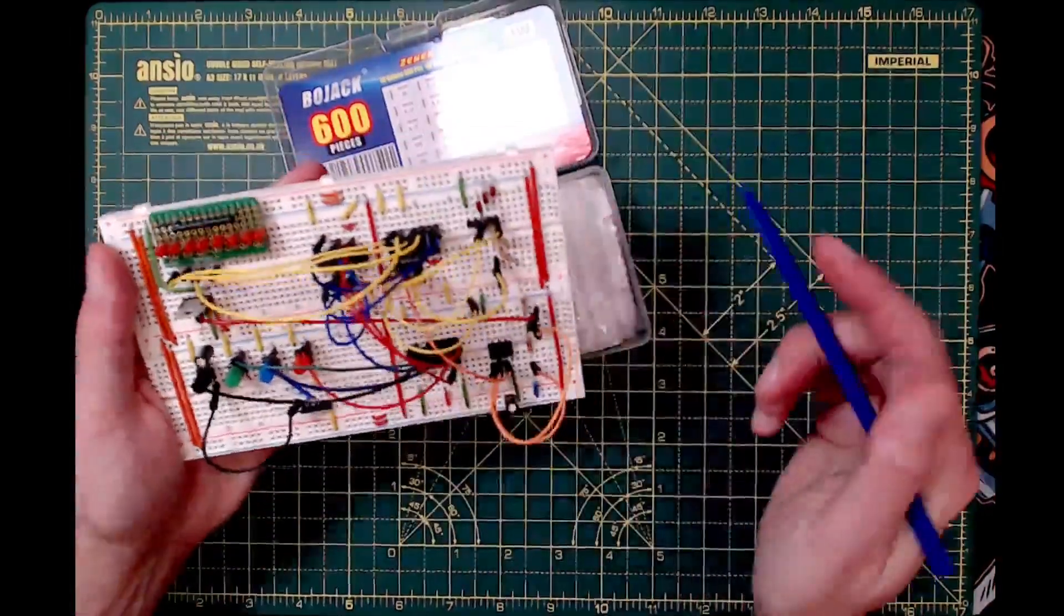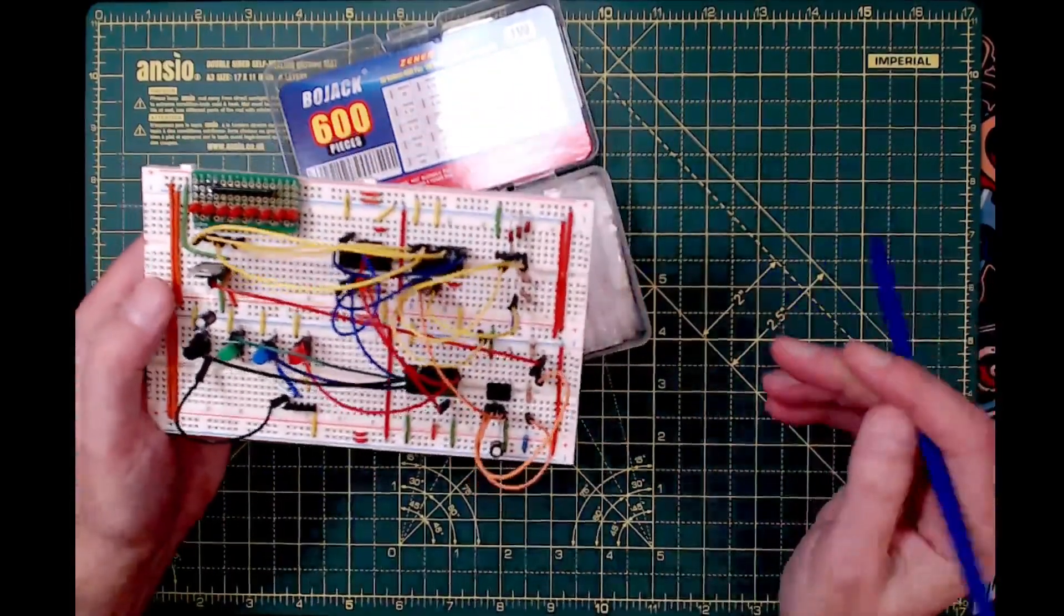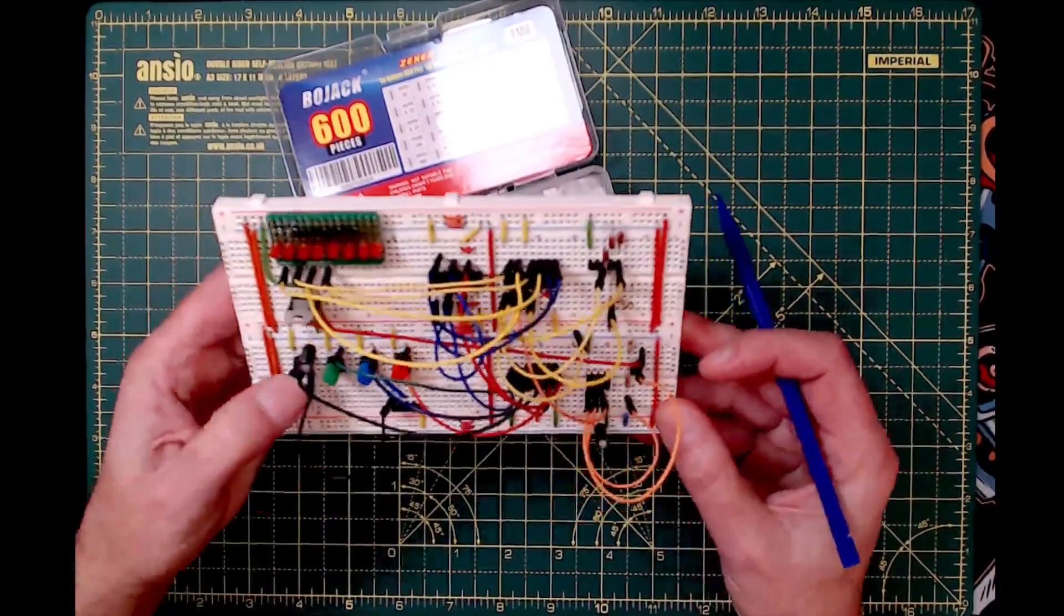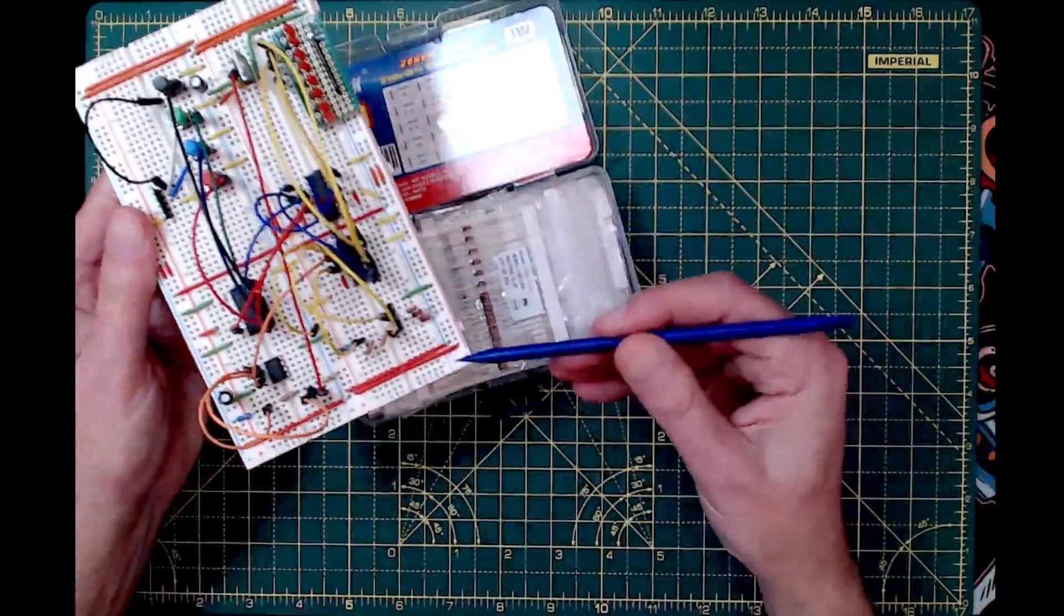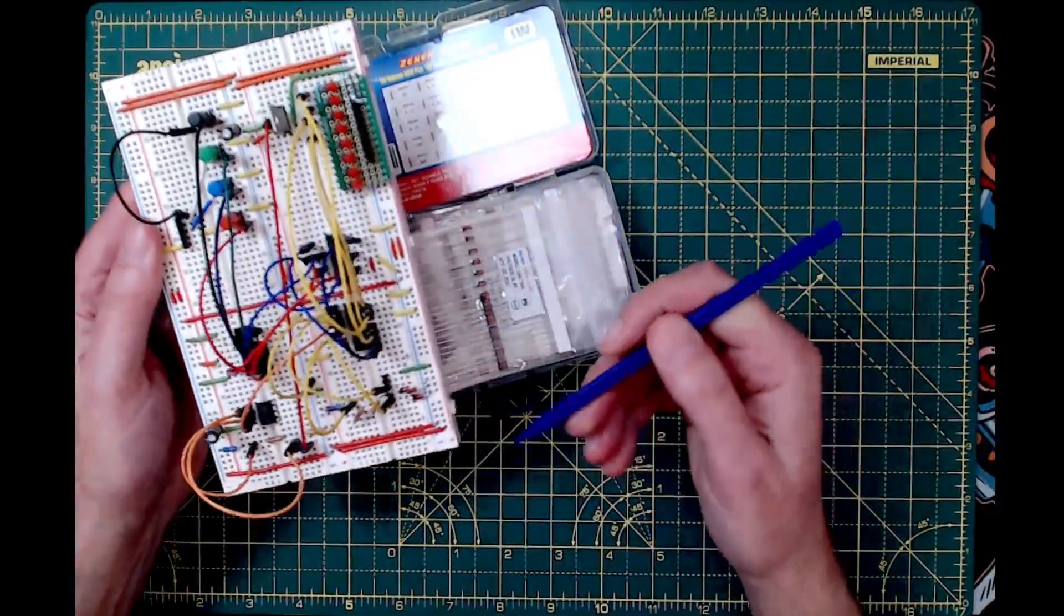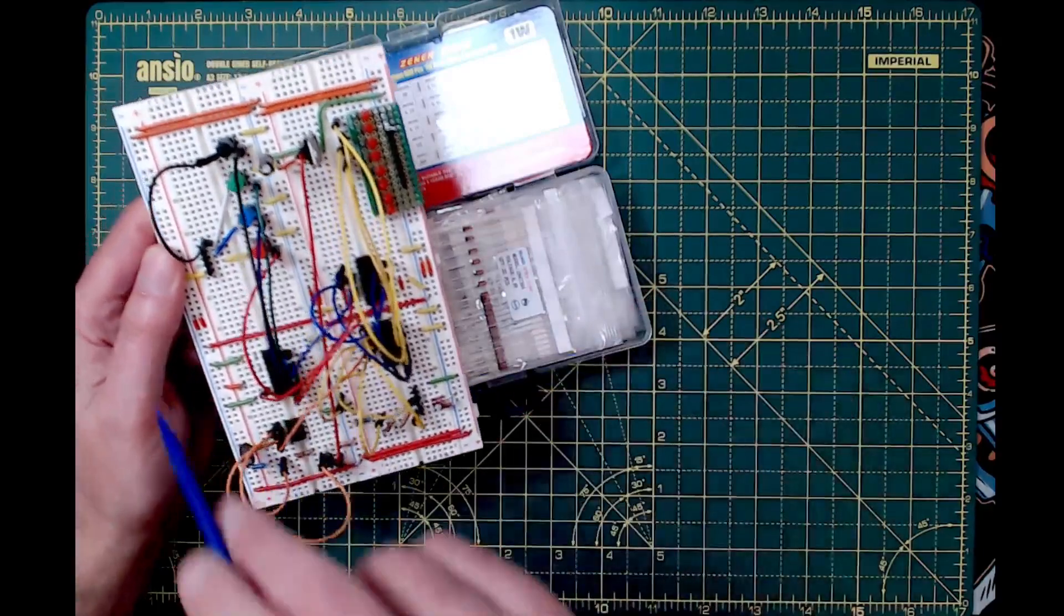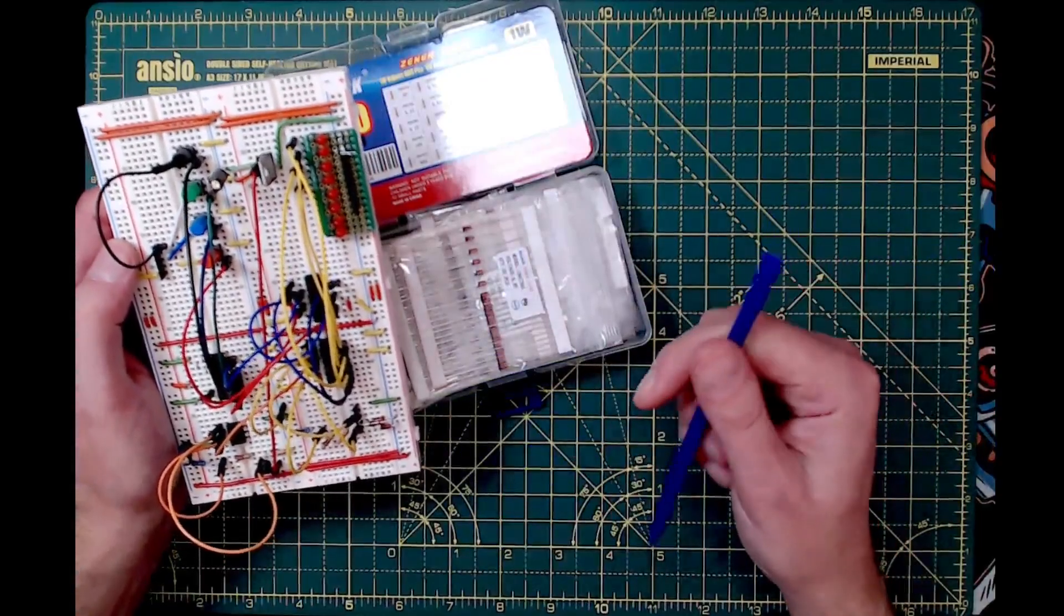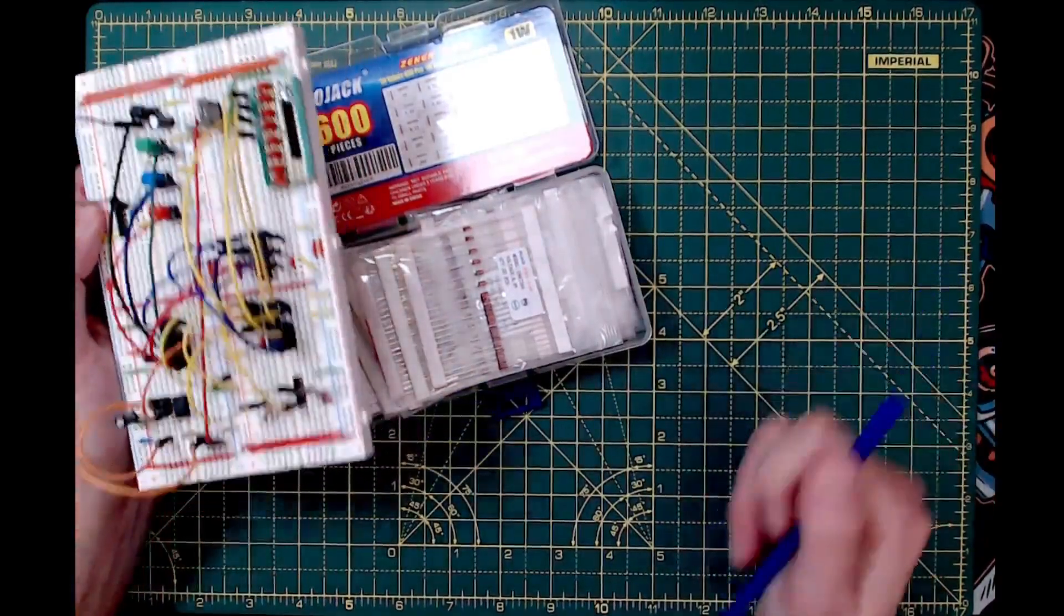An example use of Zener diodes: this was my automatic ANS simulator. Some of you probably don't know what ANS is, but I've got videos on my channel. There are three Zener diodes there, creating specific voltage references. The rest of the circuit controls and drives an output based on which one I selected. So that's Zener diodes.